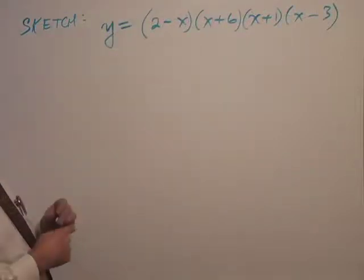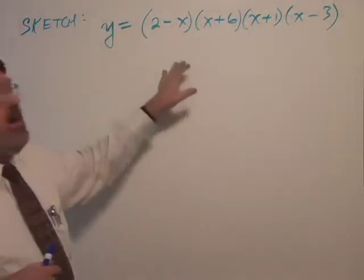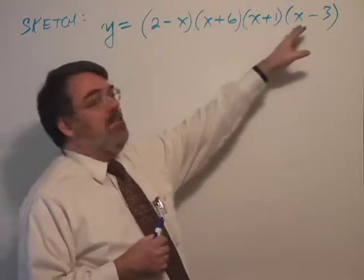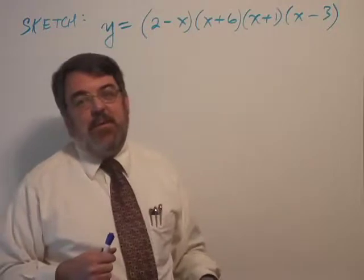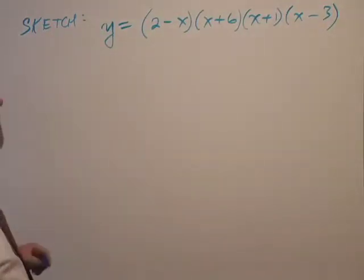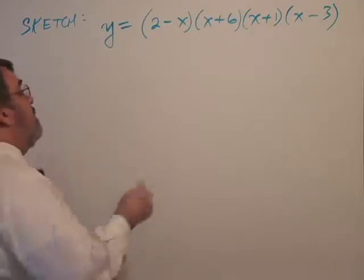Here's our new function: y equals (2 minus x)(x plus 6)(x plus 1)(x minus 3). I'm going to use a similar technique here. If I were to multiply this out, what would it look like?